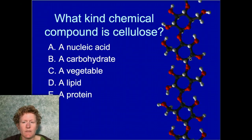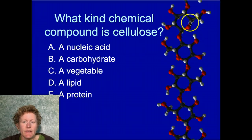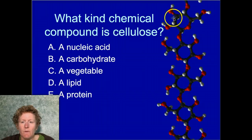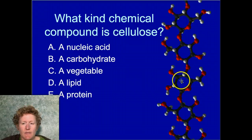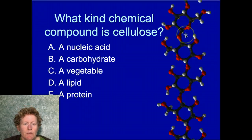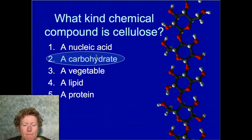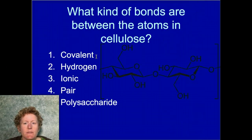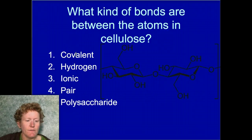Cellulose is an important compound for plants — it's a bunch of glucose molecules bonded together in covalent bonds, making a very strong, rigid molecule. It's a carbohydrate, of course, because it's made out of sugars. The bonds in cellulose are covalent, which is why it doesn't dissolve in water.